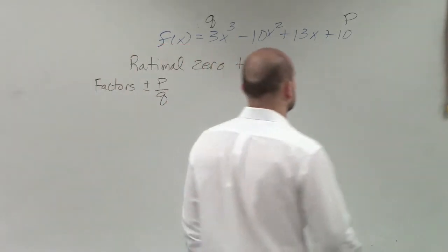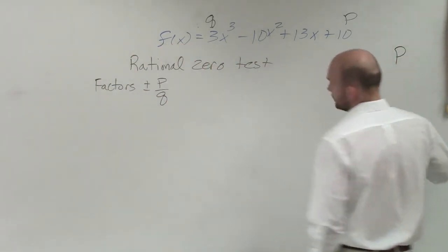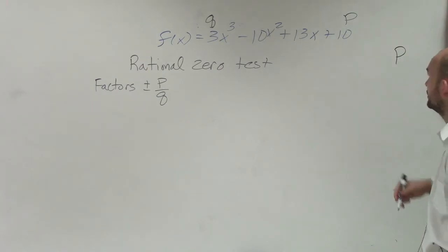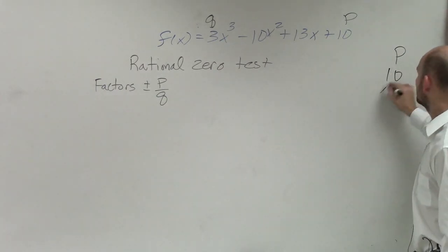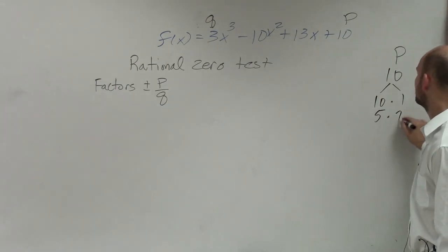So when doing that, you can determine, well, let's take a look at what is p and the factors of p. p is 10. Then the factors of 10 are going to be 10 times 1 and 5 times 2.